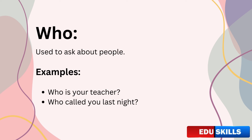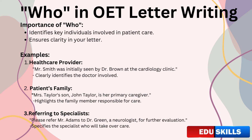Let's start with one of the most commonly used question words: who. This is a powerful word in English as it helps us identify the person or people involved in a particular situation. Understanding how to use who effectively is essential, whether you are asking simple questions in daily life or formulating complex queries in a professional setting. We use who to ask about a person or people — for example, 'Who is your teacher?' or 'Who called you last night?' Now let's talk about how to use who in OET letter writing.